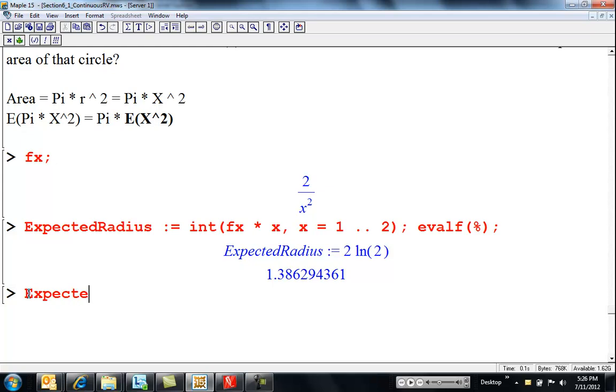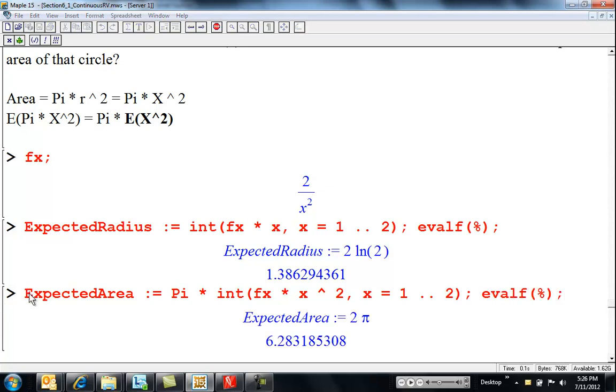Expected area equals pi times integral of f of x times x squared from x equal 1 to 2. And let's just be smart and put an eval f on here. So, expected area should be 2 pi.